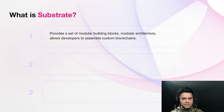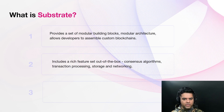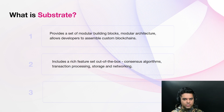It provides a set of modular building blocks and modular architecture, allowing developers to assemble a custom blockchain that meets their specific needs. Substrate provides a rich set of features out of the box, including consensus algorithms, transaction processing, storage, and networking. The framework also includes features like runtimes, which are the basic building blocks for blockchain logic, and smart contract support, which makes it possible to build complex decentralized applications.